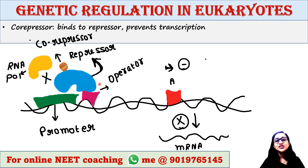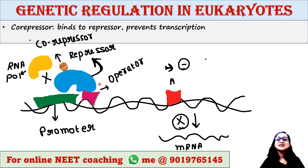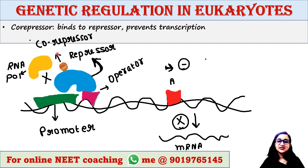In summary, gene regulation in prokaryotes and eukaryotes is almost similar. The key differences are that in eukaryotes, silencers are used instead of operators, and co-activators are used instead of inducers.